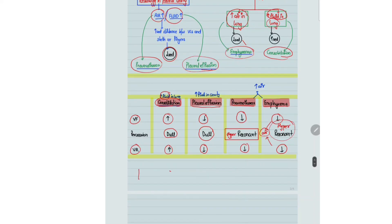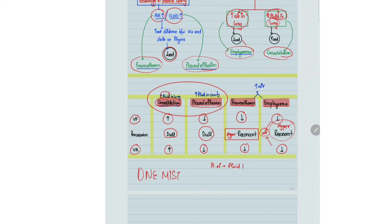One mistake you must avoid is confusing the vocal fremitus and vocal resonance findings of consolidation and pleural effusion. You might think that in pleural effusion, since fluid is increasing, sound waves should travel better and vocal fremitus or vocal resonance should increase. However, because the source of sound is moving away from the receiver, vocal fremitus and vocal resonance actually decrease in pleural effusion.